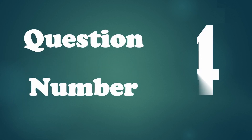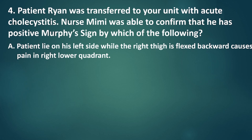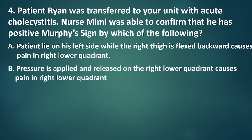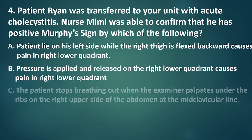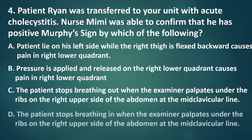Question number 4. Patient Ryan was transferred to your unit with acute cholecystitis. Nurse Mimi was able to confirm that he has a positive Murphy's sign by which of the following? A. Patient lies on his left side while the right thigh is flexed backward, causing pain in the right lower quadrant. B. Pressure is applied and released on the right lower quadrant, causing pain in the right lower quadrant. C. The patient stops breathing out when the examiner palpates under the ribs on the right upper side of the abdomen at the midclavicular line. D. The patient stops breathing in when the examiner palpates under the ribs on the right upper side of the abdomen at the midclavicular line.